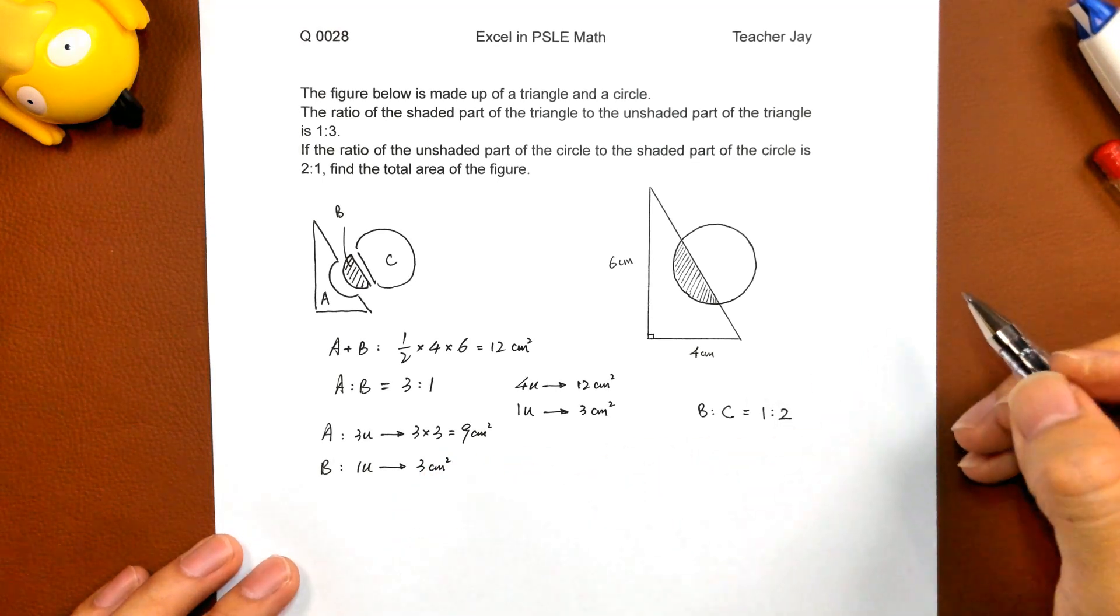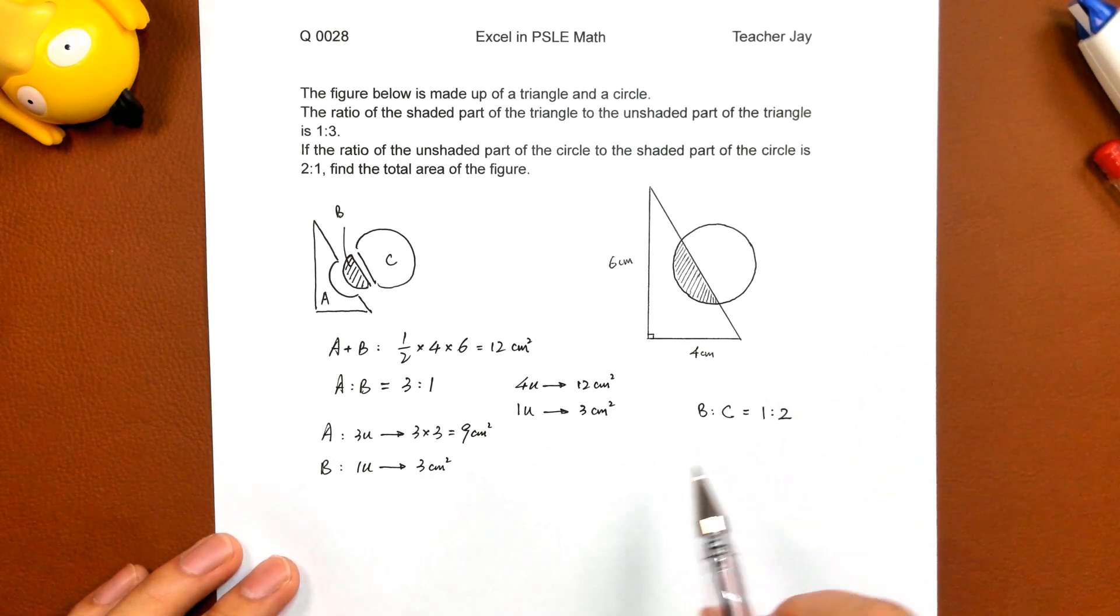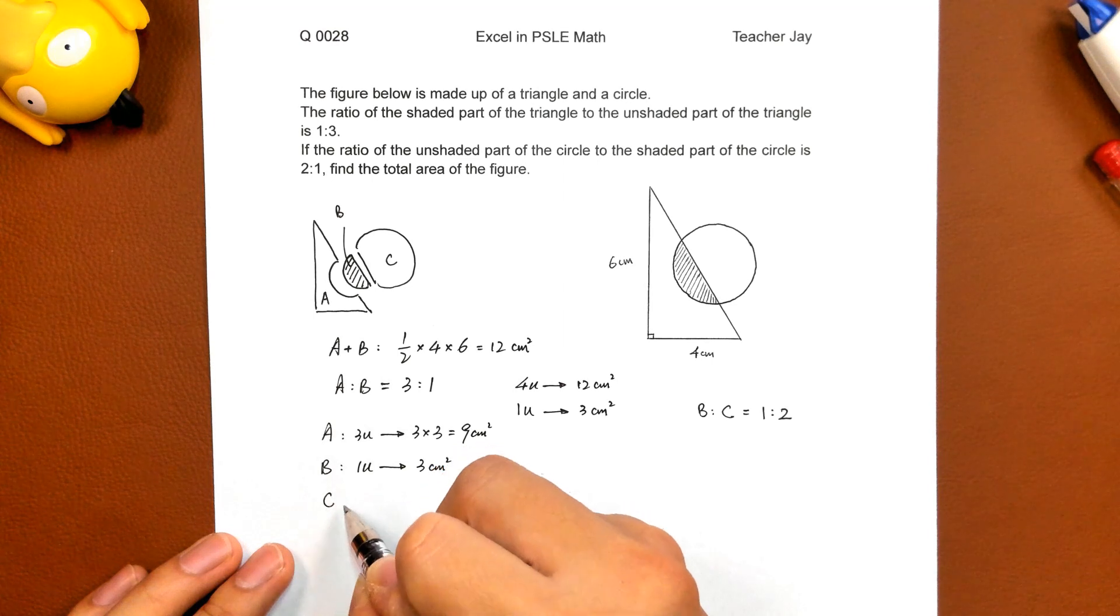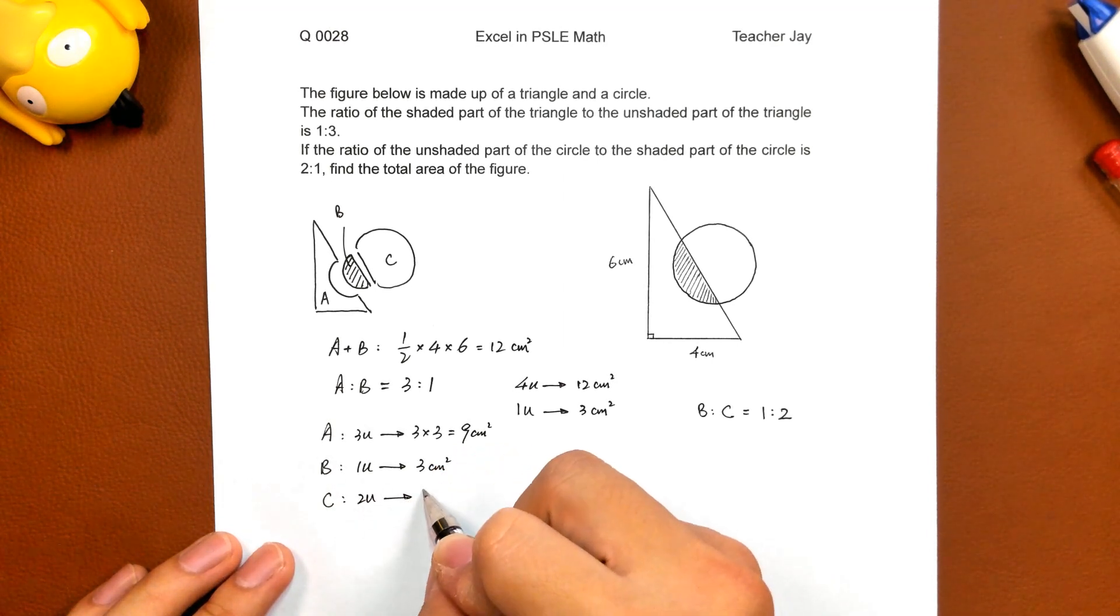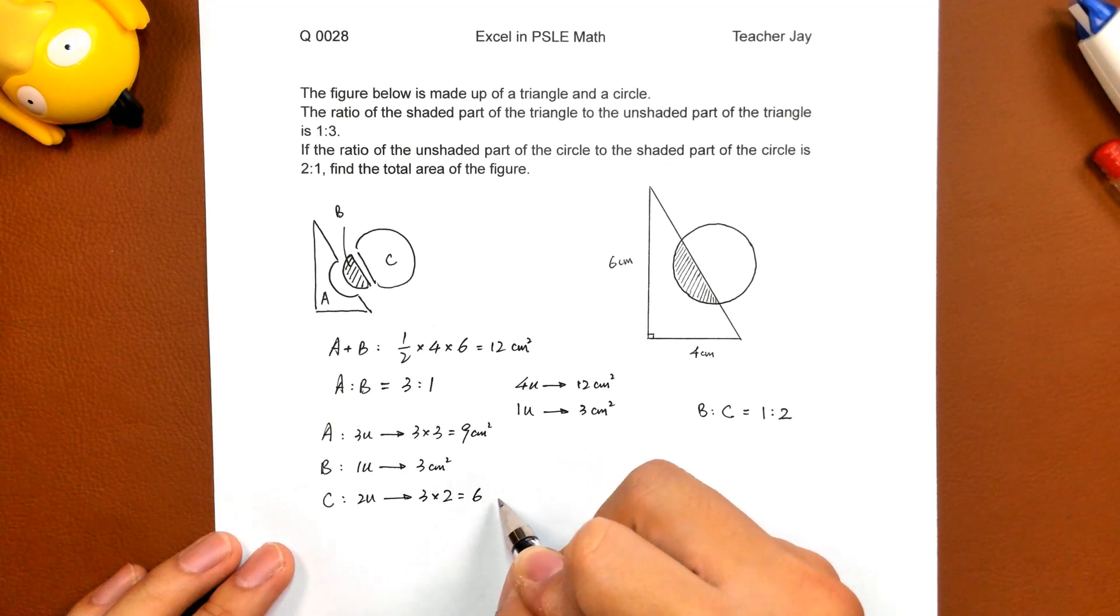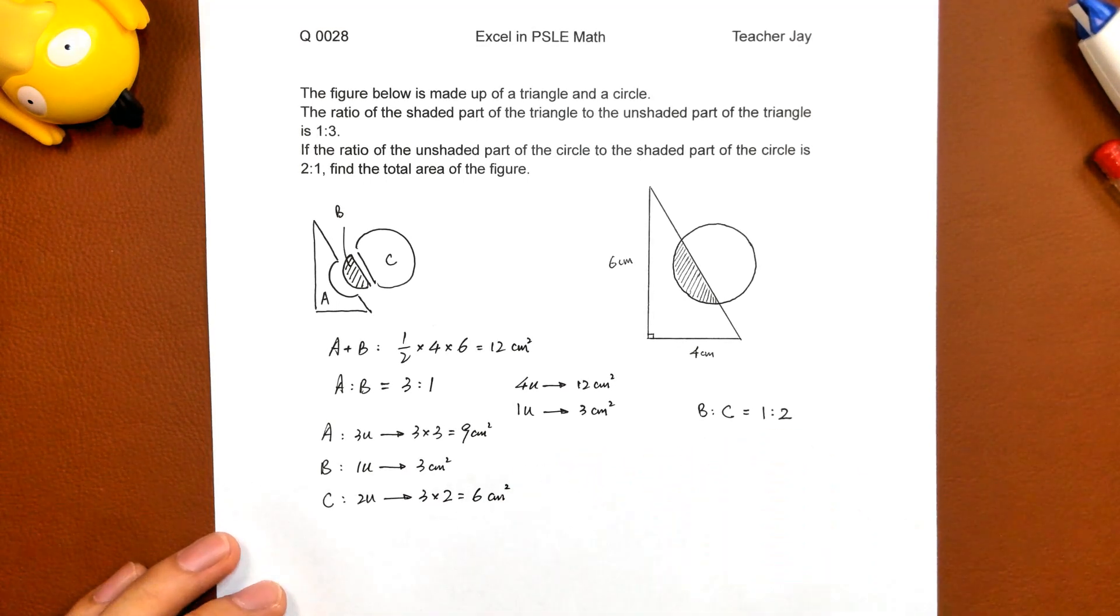That means B, 1 unit, C, 2 units. C, part C, 2 units. 3 times 2, 6 square centimeters.